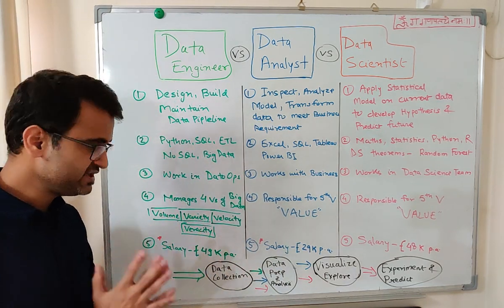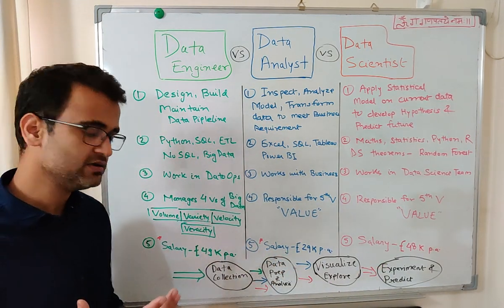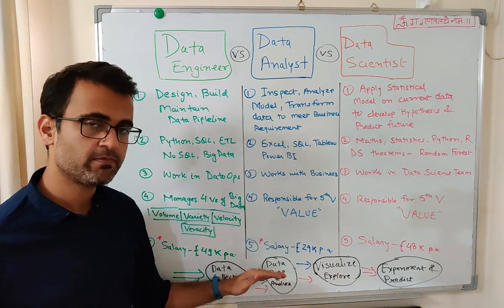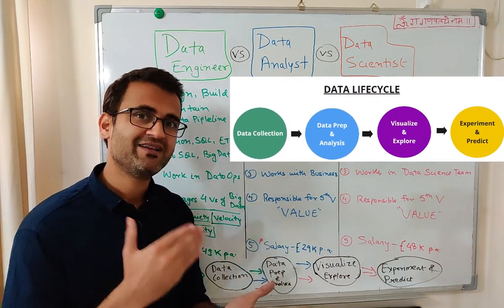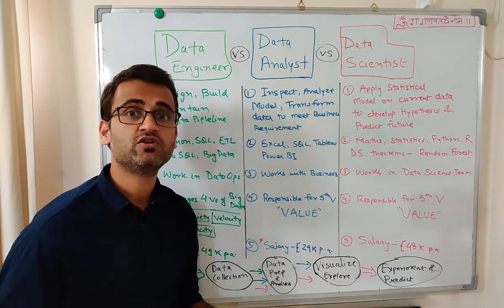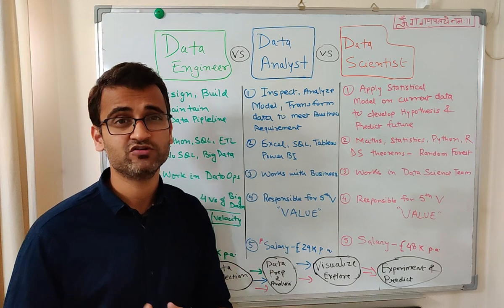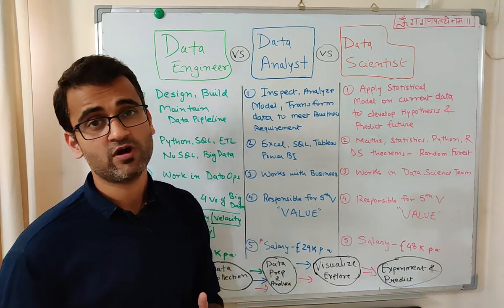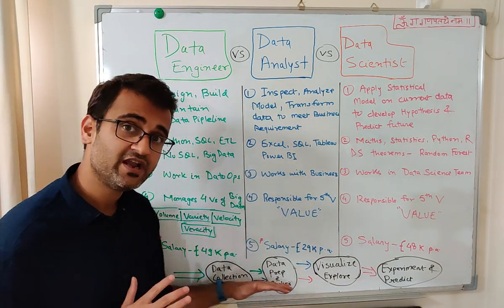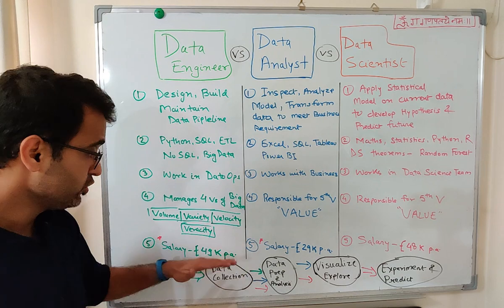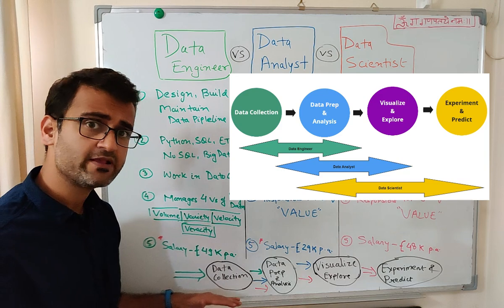Looking at the major data lifecycle flow: data collection, data prep and analysis, visualization and exploration, and experimentation and prediction — the roles overlap. A data engineer sometimes does a data analyst's job, and a data scientist might do a data engineer's job depending on the team and business model. Data collection is primarily done by data engineers, but analysts and scientists may pitch in.